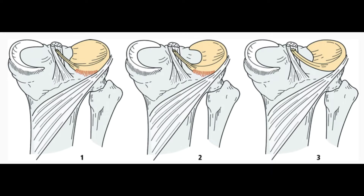Batonib classification classifies discoid meniscus into three types. Type 1 is complete discoid meniscus. Type 2 is incomplete, and type 3 is when there is a lack of posterior meniscotibial attachment to the tibia.